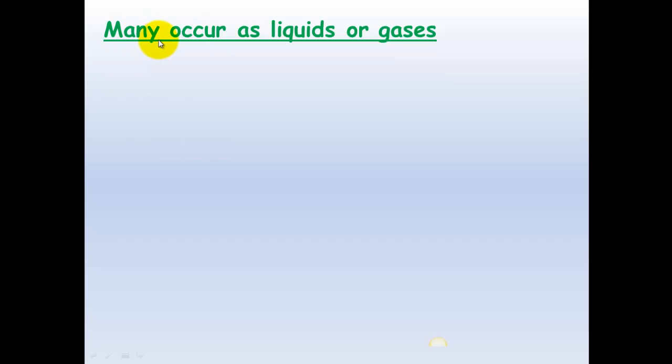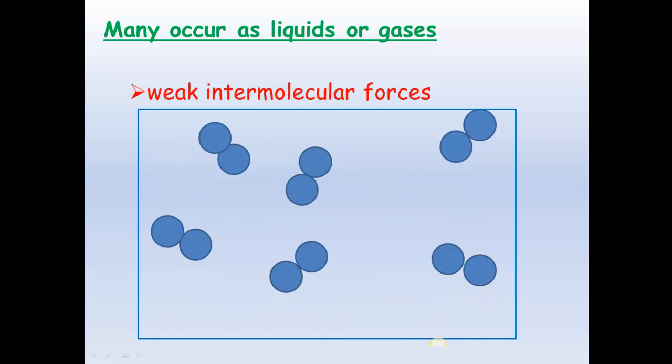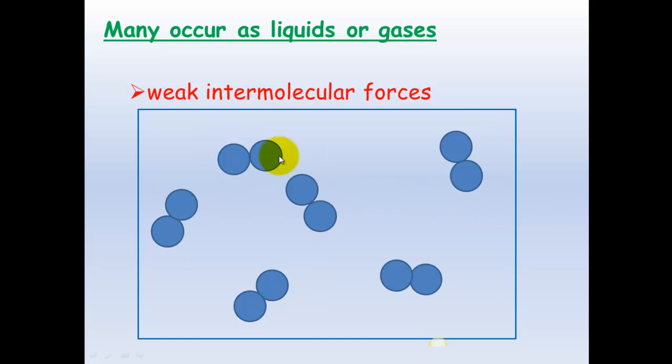So most covalent molecules will occur as liquids and gases, and this is because of the weak intermolecular forces again. So if we look at oxygen here, these oxygen molecules are not attracted to one another. They just move around separately and remain discrete molecules. There is very little interaction except for dispersion forces, so it exists as a gas at room temperature.